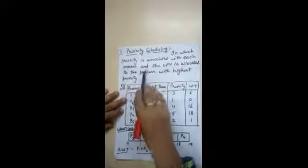In priority scheduling, priority is associated with each process and the CPU is allocated to the process with the highest priority. Scheduling means deciding which process will be allocated to the CPU first. In priority scheduling, the process with the highest priority will be allocated to the CPU first.